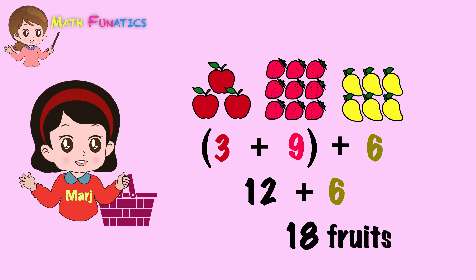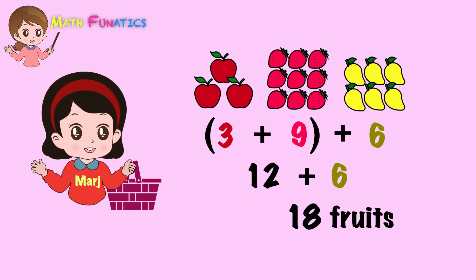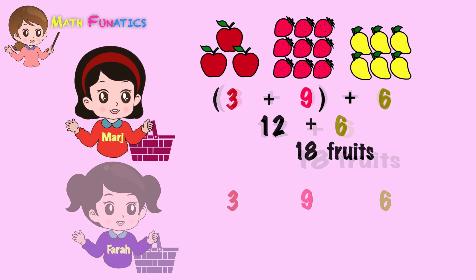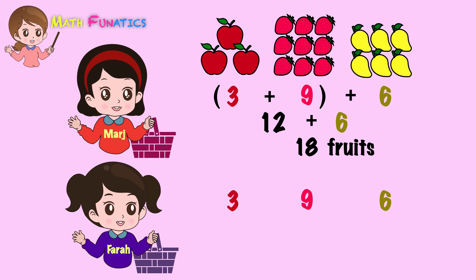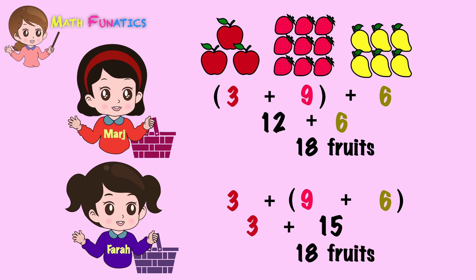On the other hand, Farah did a different way of adding the fruits. She grouped the strawberries and mangoes first. She did 9 plus 6 and got 15. Then she added the 3 apples to 15 and got 18 fruits in all.